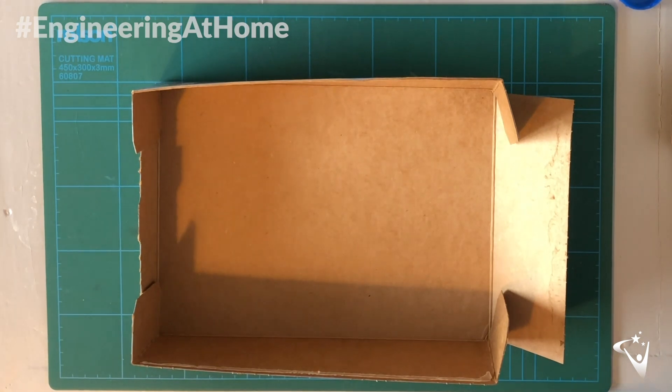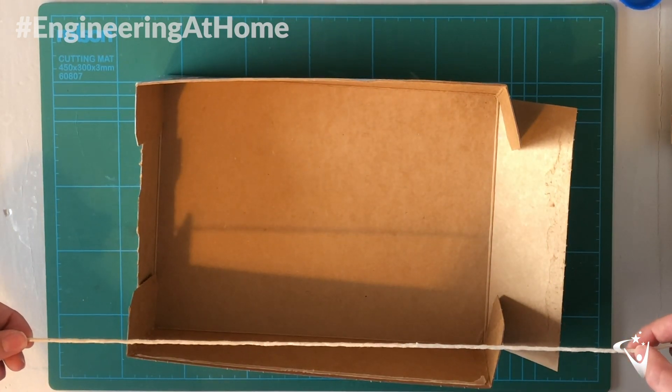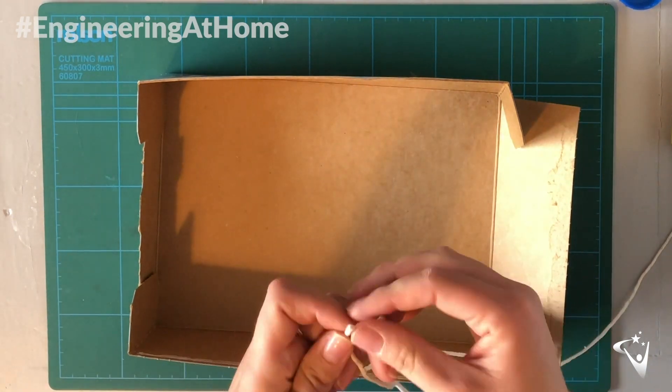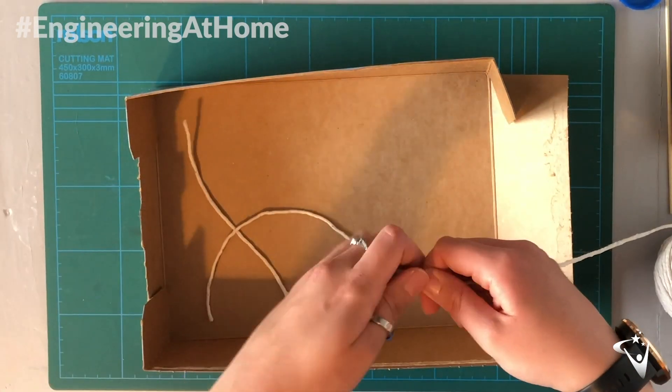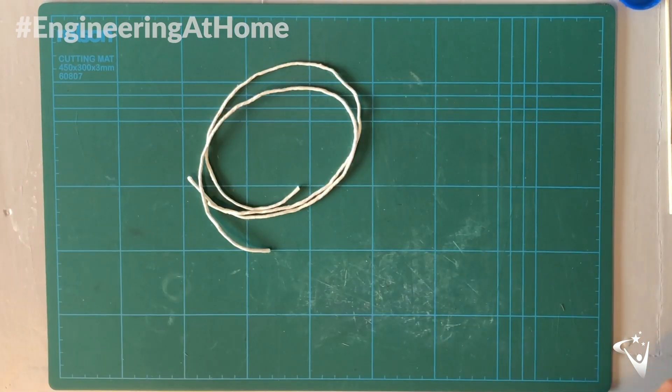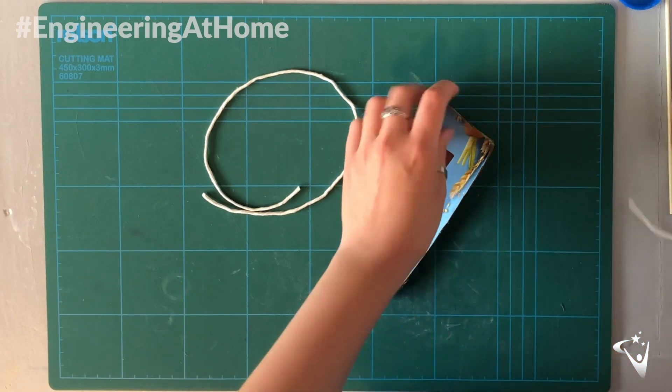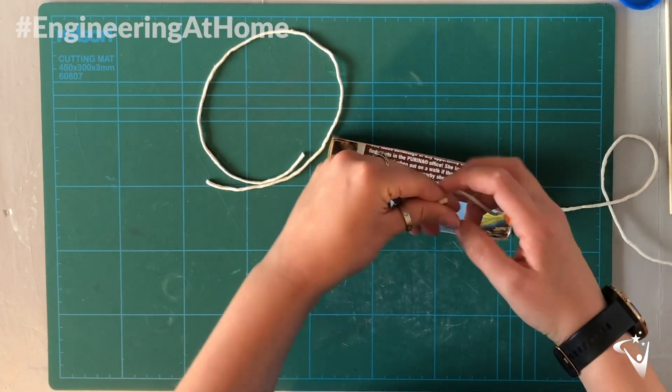Next we want to take our large box and cut out two pieces of string. These need to be as long as the box but with plenty of extra on either side. And you're going to want two exactly the same length. Then you can tie the string to your carriage by threading it through the small holes on either side and tying a knot in the end to secure it in place.